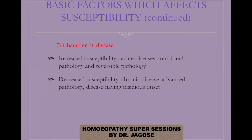Regarding the character of disease: in acute disease, functional pathology, reversible pathology, or pathology in the initial stages, susceptibility is increased. Whereas in chronic disease with advanced pathology, susceptibility is decreased, and this also applies to chronic diseases having an insidious onset.